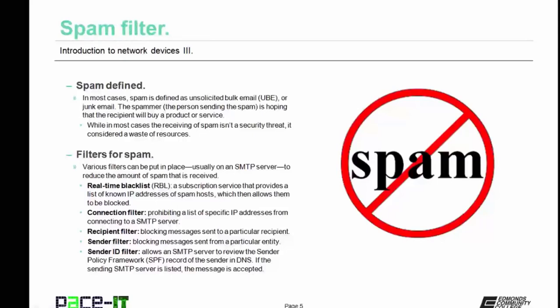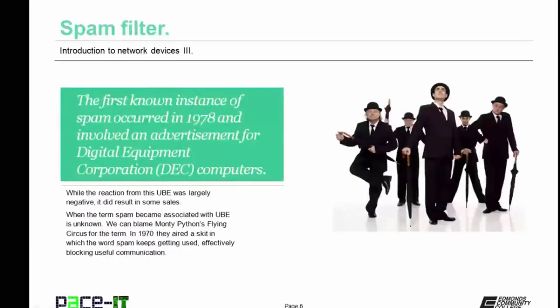There are also sender filters—blocking messages from a particular entity—and the sender ID filter, which allows an SMTP server to review the sender policy framework, or SPF record, of the sender in DNS. If the sending SMTP server is listed, the message is accepted and not counted as spam. The first known instance of spam occurred in 1978 and involved an advertisement for Digital Equipment Corporation computers. While the reaction was largely negative, it did result in some sales, and the spam industry was born.